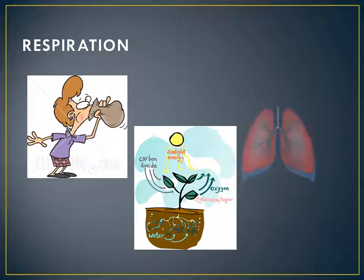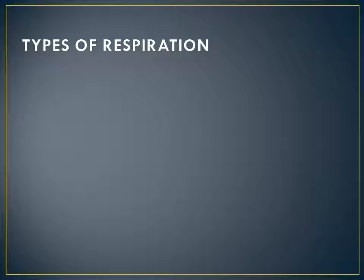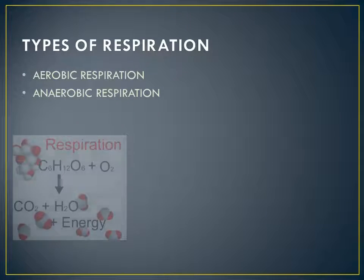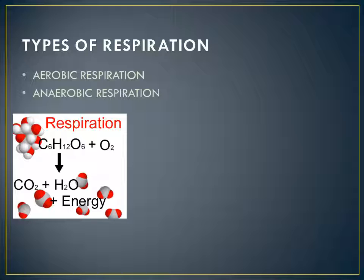There are two types of respiration: aerobic respiration and anaerobic respiration. Aerobic respiration takes place in the presence of oxygen, and it is carried out in almost all living organisms and plants. In aerobic respiration, there is complete oxidation of glucose. Glucose and oxygen are converted into carbon dioxide, water, and energy. The energy liberated during aerobic respiration is much more than that released in anaerobic respiration.